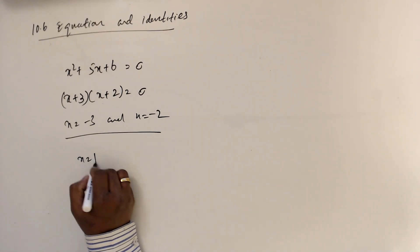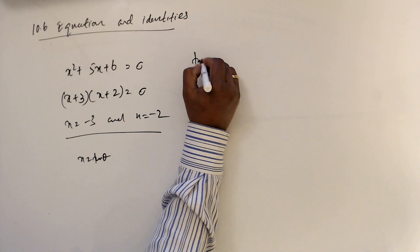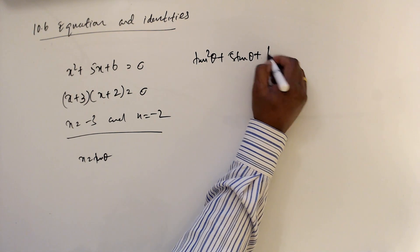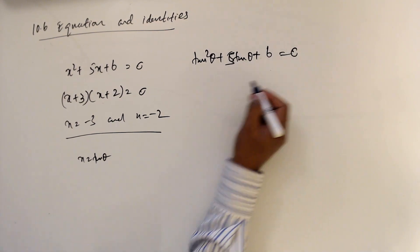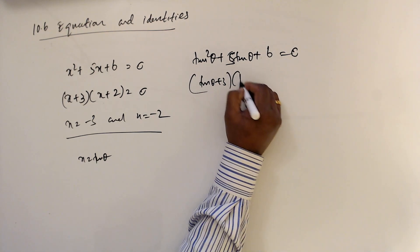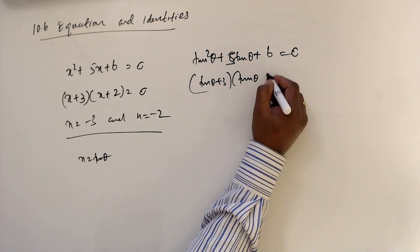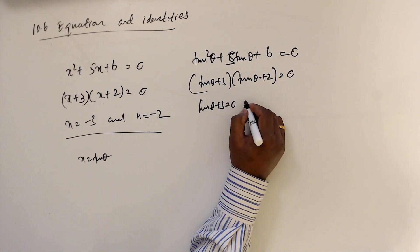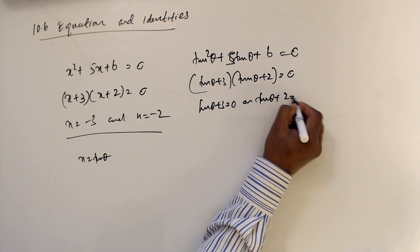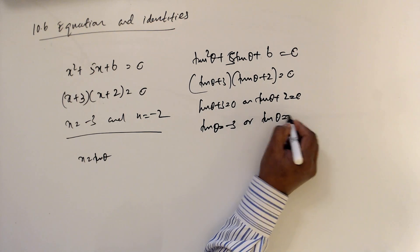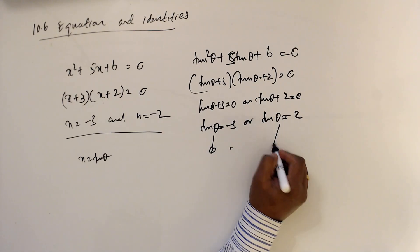Now, what will happen if instead of x I write tan theta? So this becomes tan squared theta plus 5 tan theta plus 6. We can bracket this as (tan theta plus 3)(tan theta plus 2) equals 0. So tan theta plus 3 equals 0 or tan theta plus 2 equals 0, giving tan theta equals minus 3 or tan theta equals minus 2. Now you know how to solve from here onwards.